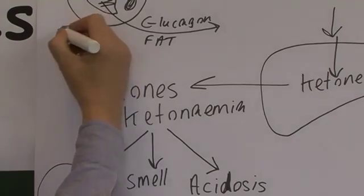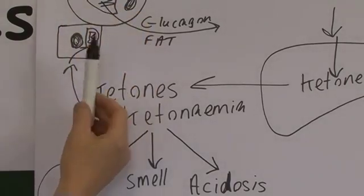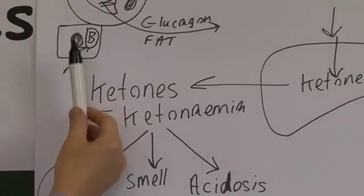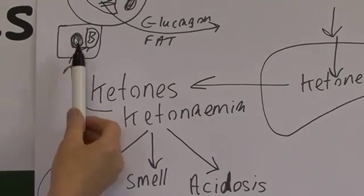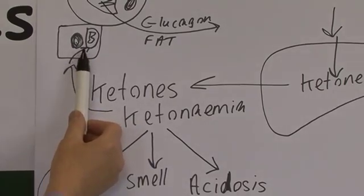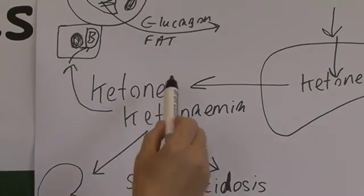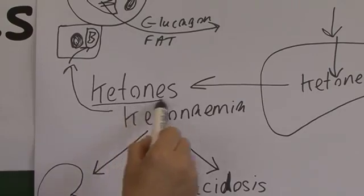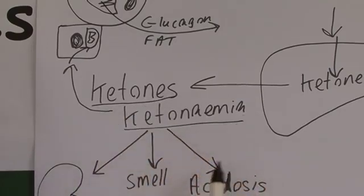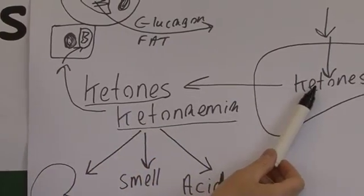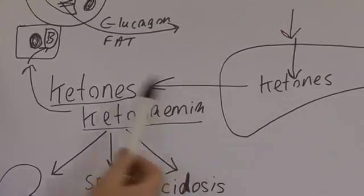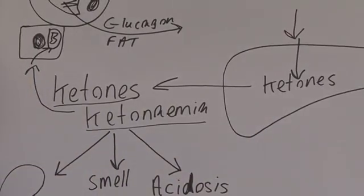So that's, in a sense, it's good, because we have a maintenance of energy production. But the cells can only use the ketones slowly. So the ketone bodies in the blood accumulate, we get this ketonemia, because the liver is producing them much more quickly than the peripheral cells can use them.